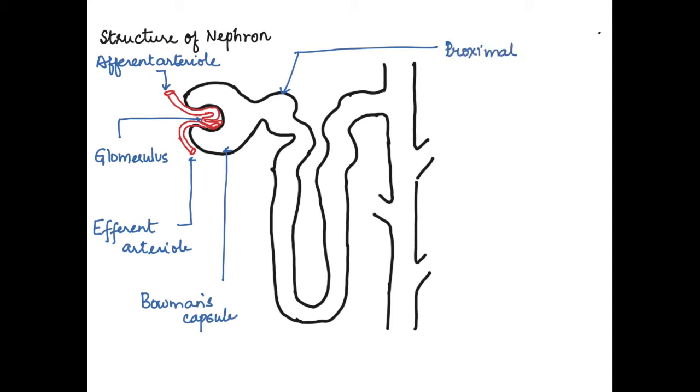The Bowman's capsule then forms a thick convoluted tubule called the proximal convoluted tubule. This proximal convoluted tubule forms a loop and then comes up to form another convoluted part called the distal convoluted tubule.